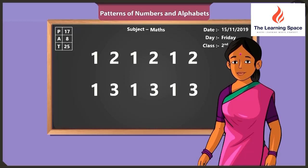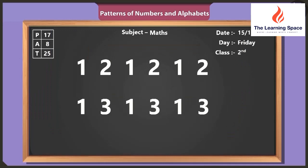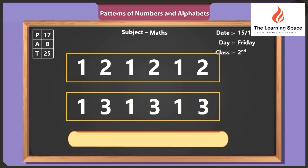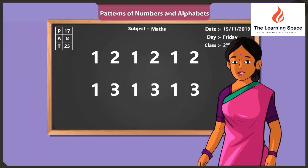Now, can you tell me what is special about these numbers? Here the first line, the number one and two are repeated again and again. And in the second line, number one and number three are repeated. Oh yes, this has become a pattern of numbers. Rightly said, Vinny.